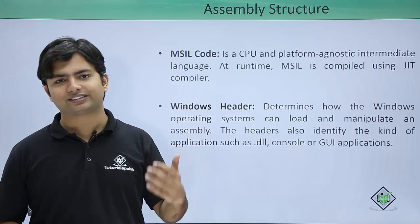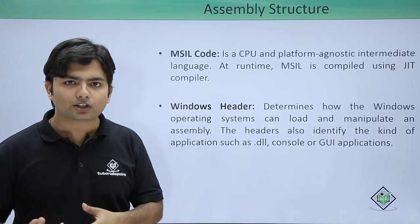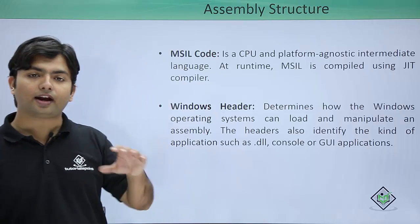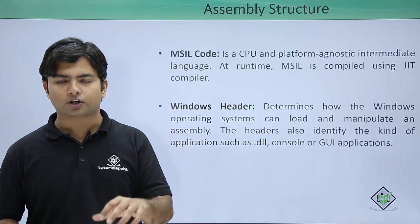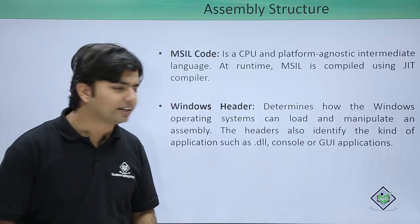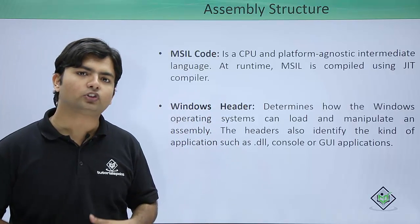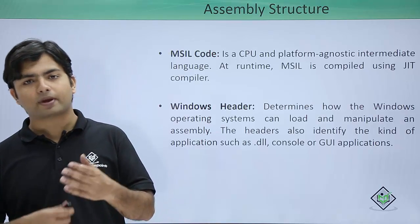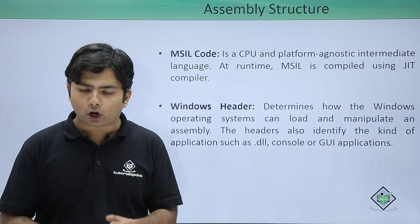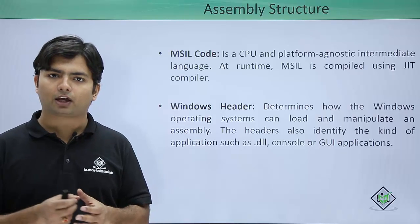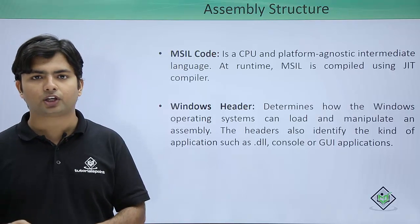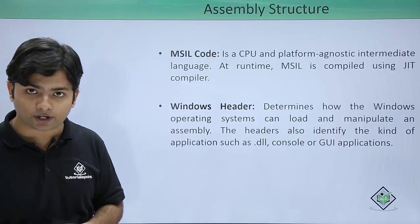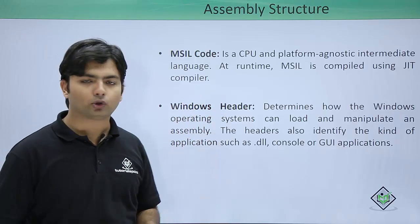The MSIL code is the compiled code from a specific language compiler. The machine will not be able to understand it directly — it requires a Just-In-Time compiler to execute this code. Next is the Windows header, which checks how a particular window will load or manipulate a particular assembly, and also determines which type of application you are working on — whether it's a console application, Windows application, or class library.